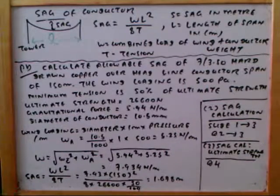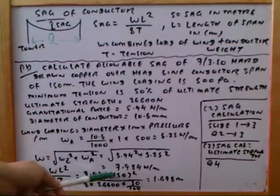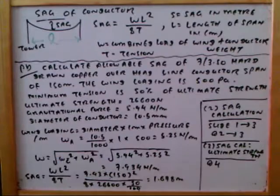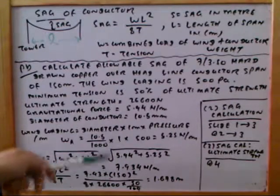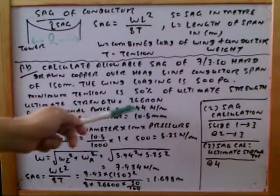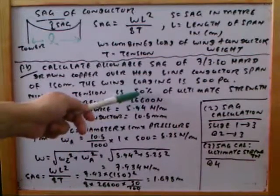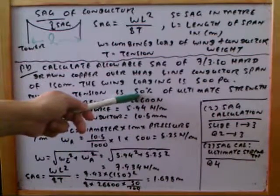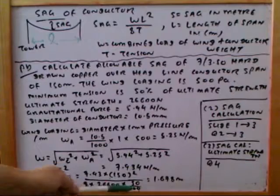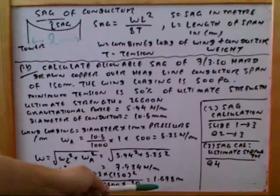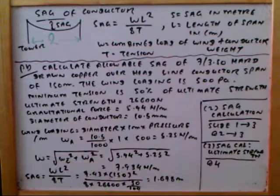We can now calculate the sag: sag = wa²/8T = 7.934 × 150² / 8T. The tension T is 50% of the UTS of 26,600 newtons, so T = 26,600 × 50/100 = 13,300 N. Solving this, the sag equals 1.678 meters.